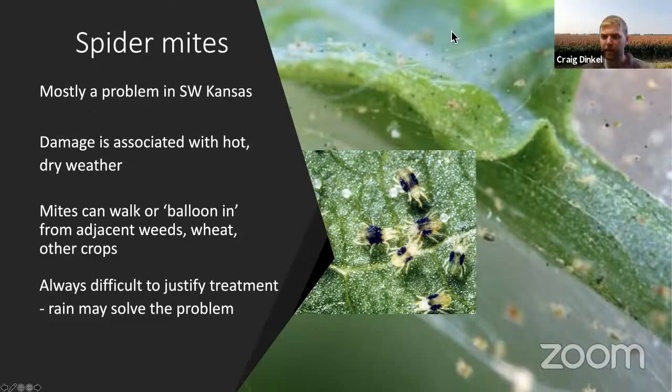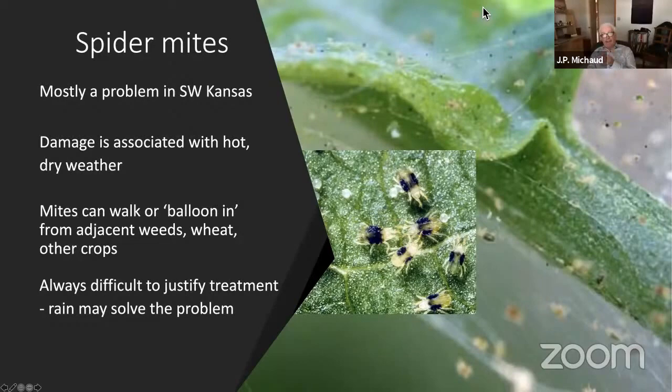There was a question about whether the cold weather in Texas will reduce occurrence of sugarcane aphid. JP noted he'll finish up with a slide on the impact of that cold weather.